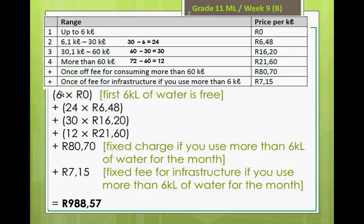So this is the calculation. For the first 6 kilolitres, you don't pay anything — it's free for everybody. This gives you an incentive to keep your water consumption very low in a month, because water is a valuable resource. In this line we pay 6.48 per kilolitre and there are 24 kilolitres. In this line you consume 30 kilolitres and pay 16.20. Then 12 kilolitres charged at 21.60, then an additional 18.70, and then 7.15.